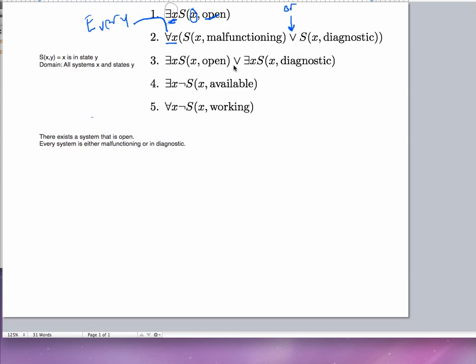Now the third here, there's another disjunction, but it's between two quantified statements. So there's this or this. So let's do each one of those individually. The first statement is exactly what we did in number one. So it would say there exists a system that is open. And then the second one is similar. There exists a system that is diagnostic.